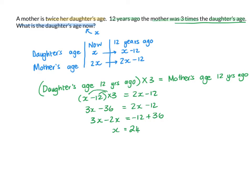Let's quickly check if I was correct. So if the daughter's twenty-four, the mother will be forty-eight. Twelve years ago, the daughter was twelve, and twelve years ago the mother will have been thirty-six. And twelve times three is thirty-six — so yes, I am correct. It's always helpful to check your answer once you've done to see if it makes sense.